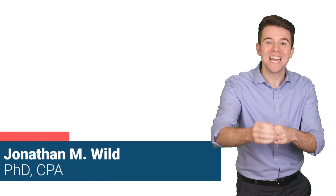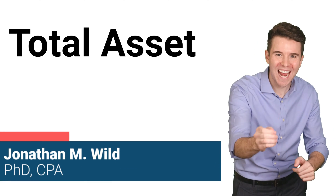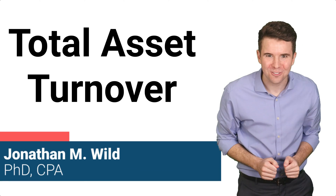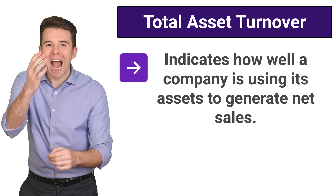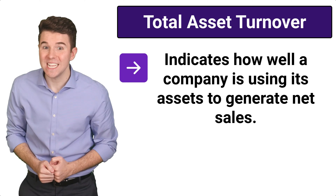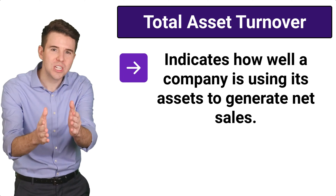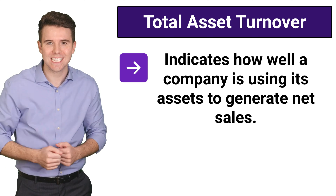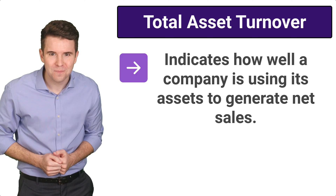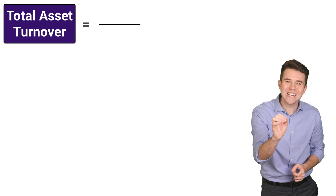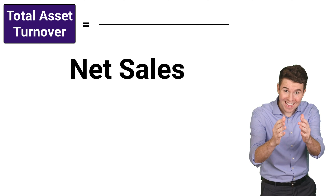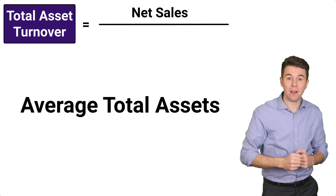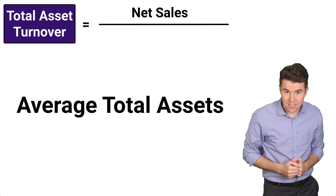Hi, I'm Jonathan Wild, and we're covering total asset turnover. Total asset turnover tells us how well a company is using its assets to generate net sales. To compute the ratio, we take net sales and divide by average total assets.